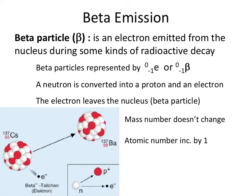So let's go ahead and look at beta decay processes. Beta particles are produced during beta emission processes. Basically, a beta particle is an electron that gets emitted from the nucleus during some types of radioactive decay. That should sound weird to you immediately because we all know that electrons are not occupying the nucleus. What ends up happening is that a neutron in the nucleus is converted into a proton and an electron. The proton remains behind and the electron leaves. Beta particles are actually represented by either this symbol or this symbol — you can use either or.